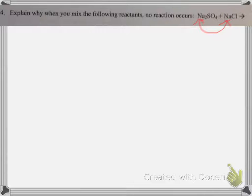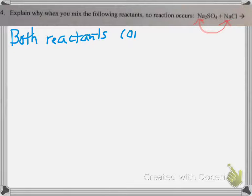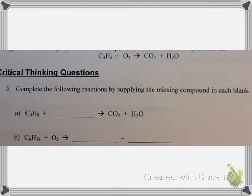Question number four: explain why when you mix the following reactants, no reaction occurs. This is a double replacement reaction, and notice that both metals are sodium — they would just swap partners with each other. When they swap partners, they don't produce anything different. The reason is that both reactants contain sodium; therefore, if the sodium atoms replaced each other, the same products would be formed — no change would occur.